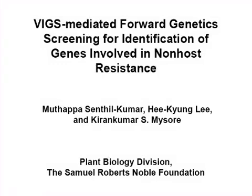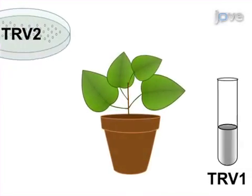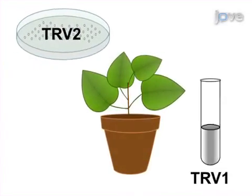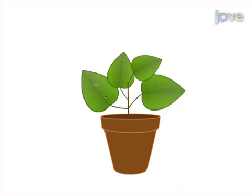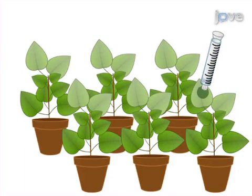The overall goal is to demonstrate the methodology using virus-induced gene silencing (VIGS) for identifying genes involved in non-host resistance. To achieve VIGS of the endogenous plant target gene, inoculate Nicotiana benthamiana plants with tobacco rattle virus VIGS construct carrying a fragment of the target gene. Then prepare and inoculate the non-host pathogen cultures expressing green fluorescent protein onto the gene-silenced plant leaves.